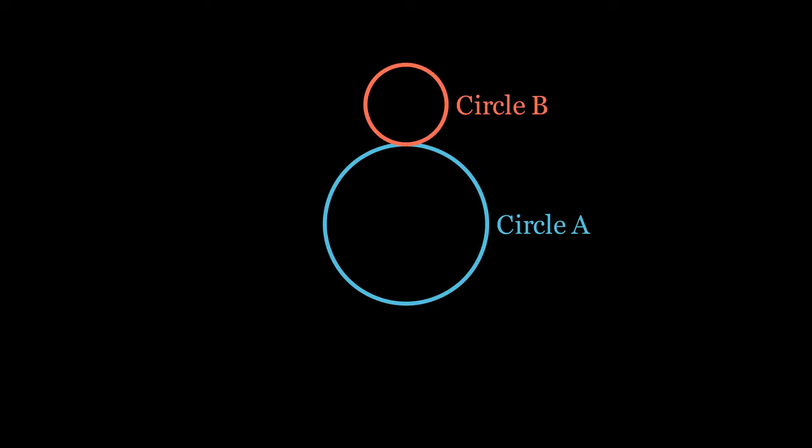Consider two circles A and B, such that circle B has half the radius of circle A. If circle B rolls over circle A without slipping, to complete a revolution around circle A, how many rotations does circle B make in this process? Pause the video and give a try.